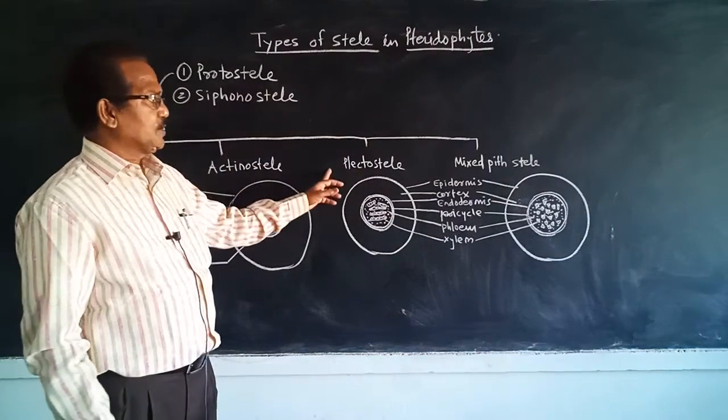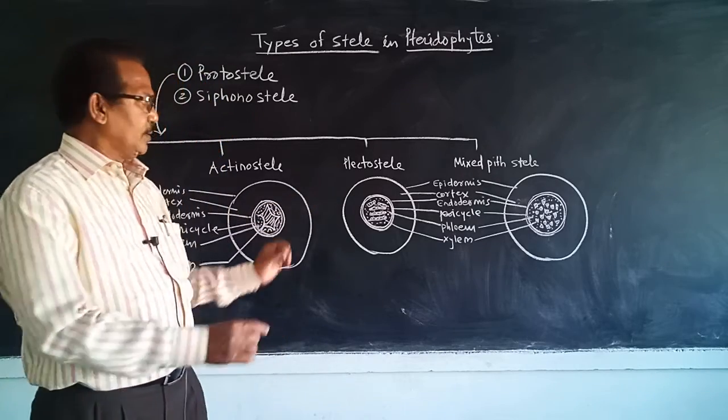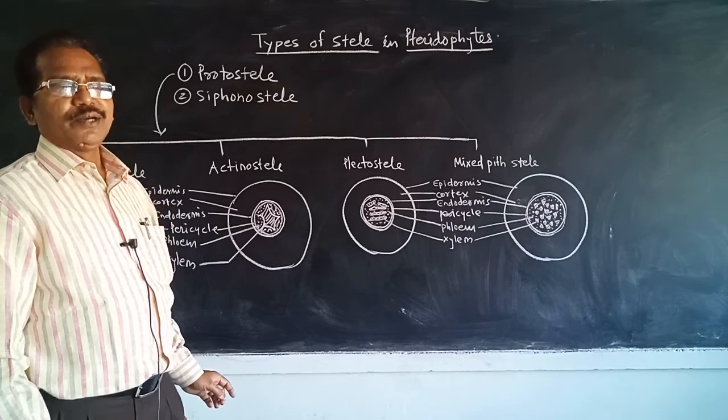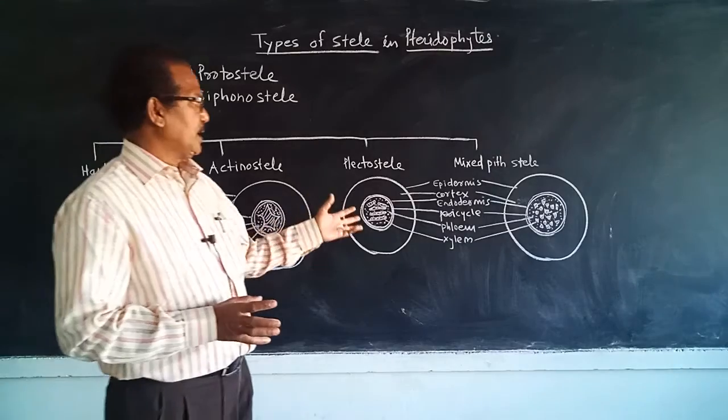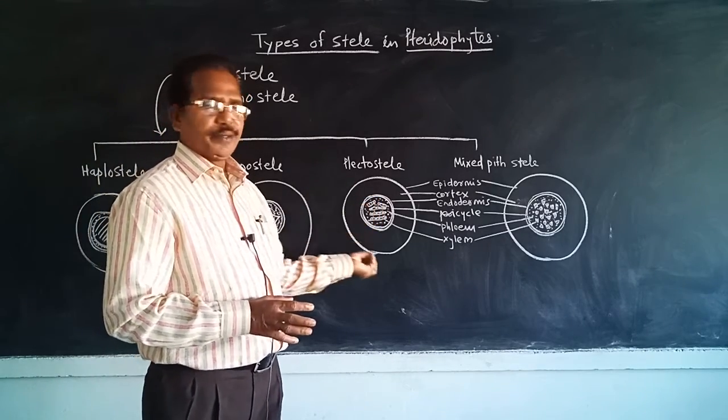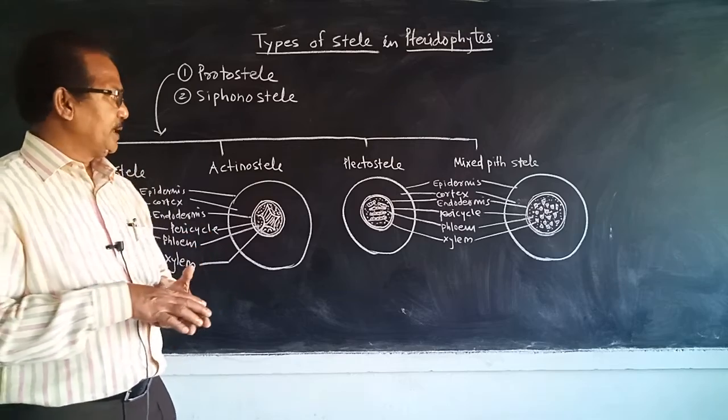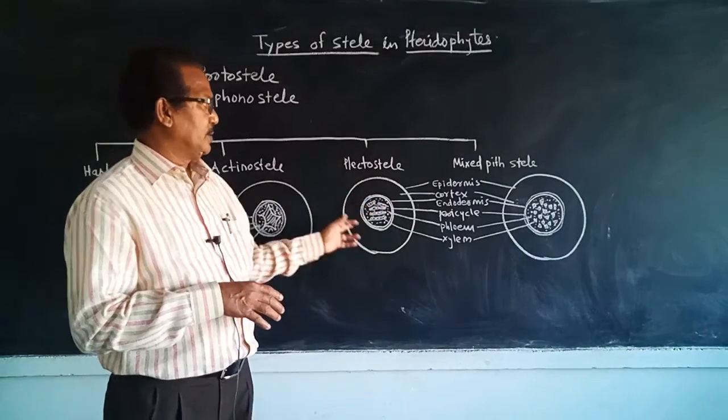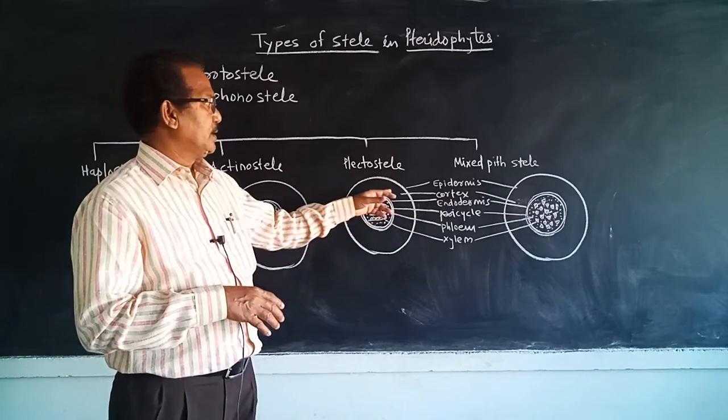Third one is plectostele. The xylem element is in plate-like manner. Xylem is divided into a number of plates, and these are mixed with the phloem. Each plate gets surrounded by a phloem element, then pericycle, then endodermis, then cortex, and outermost epidermis.